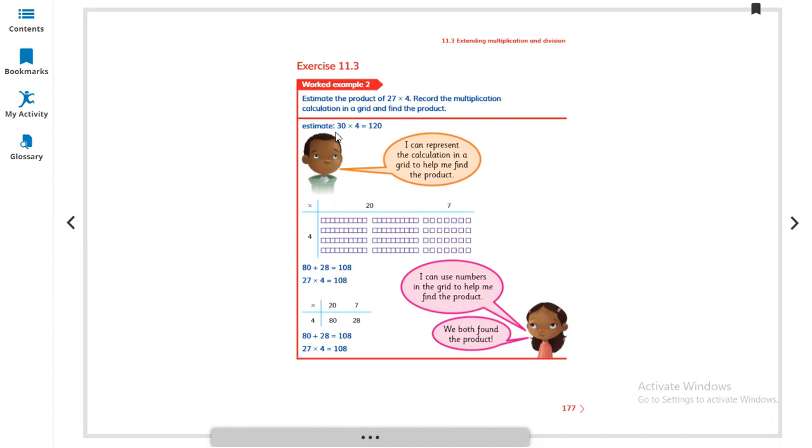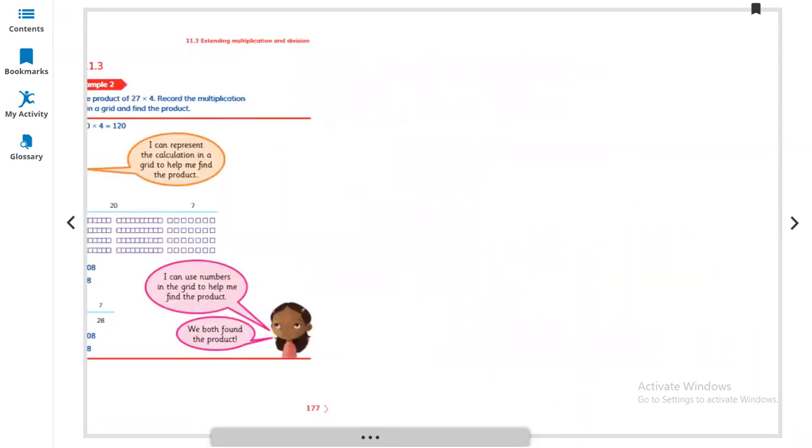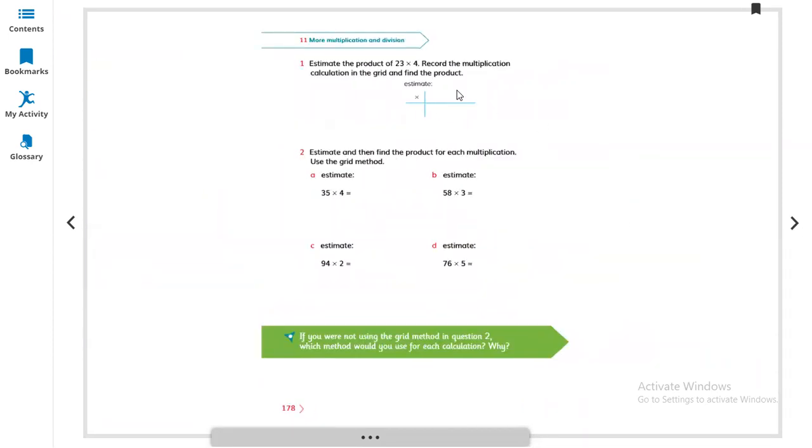So estimate 30 x 4 equals 120. Now we have the number 24 x 7, so first of all we make in parts: 27 into 20 here and 7 here, times 4. So 20 x 4 equals 80 and 4 x 7 equals 28, and plus it so you get 108. Like this you can easily find the answers.